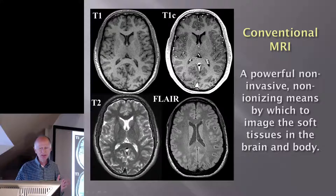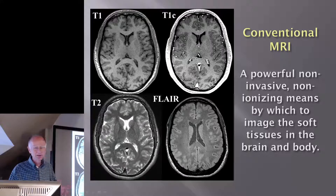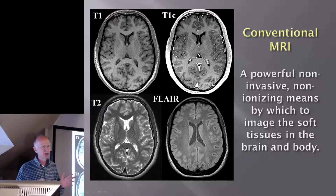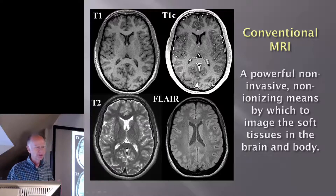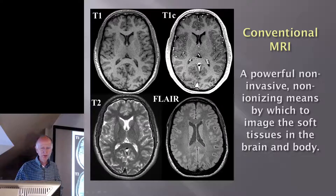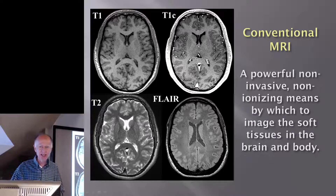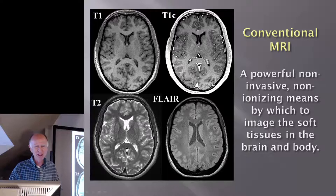The beauty of MR is that it's a powerful, flexible, non-invasive, non-ionizing means by which to image soft tissues in the human body. That makes it not only a powerful tool for radiologists but also for us as scientists. If you were to ask me whether I'd rather get a CT scan, a PET scan, or a SPECT scan, my answer would be no thanks — I'd much rather have an MRI scan.